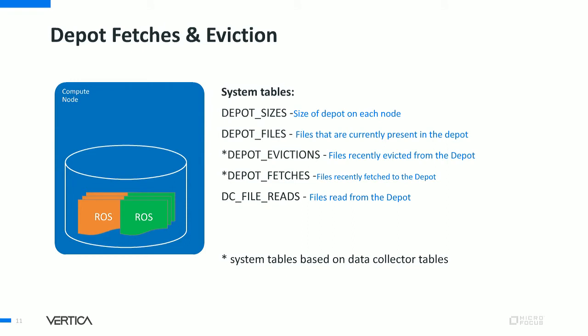There are system tables to help you understand the size of the Depot, what's in your Depot, what files were evicted, and what files were recently fetched. One important system table is DC_FILE_RATE, which can be used to determine if your transaction or query fetched data from the Depot, from communal storage, or from both.